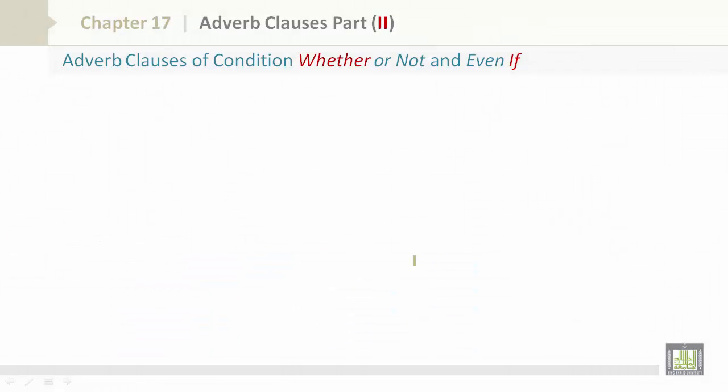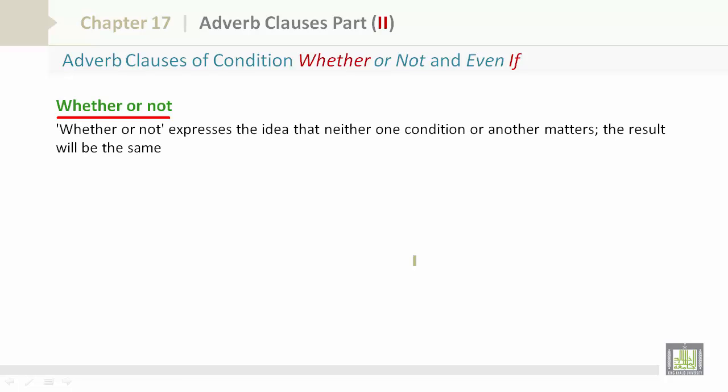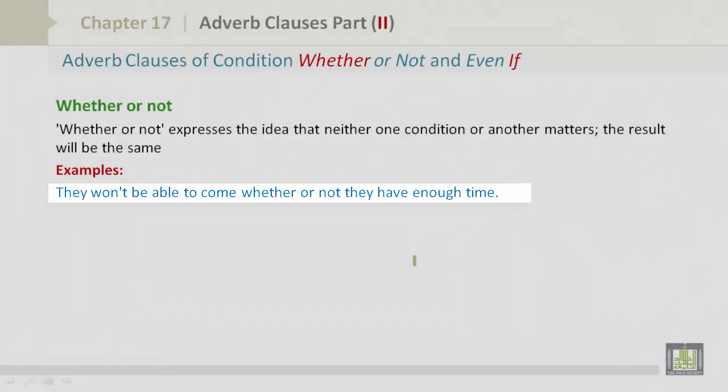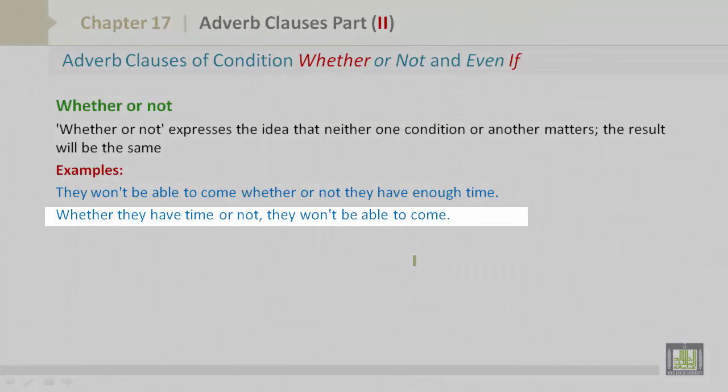Adverb clauses of condition: whether or not and even if. Whether or not expresses the idea that neither one condition or another matters; the result will be the same. For example, they won't be able to come whether or not they have enough time. Whether they have time or not, they won't be able to come.